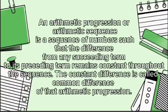An arithmetic progression or arithmetic sequence is a sequence of numbers such that the difference from any succeeding terms to its preceding terms remain constant throughout the sequence. The constant difference is called common difference of the arithmetic progression.